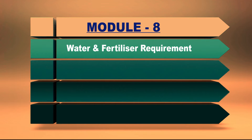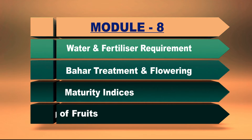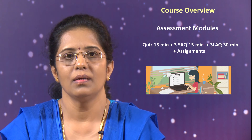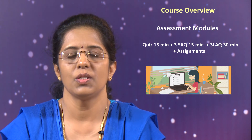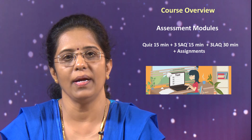The eighth module will cover water and fertilizer requirements of guava, Baha treatment, flowering, as well as maturity indices and harvesting of guava fruits. The remaining four modules will be for learners' assessment, where learners will have to solve short and long answer questions, followed by quizzes and assignments.